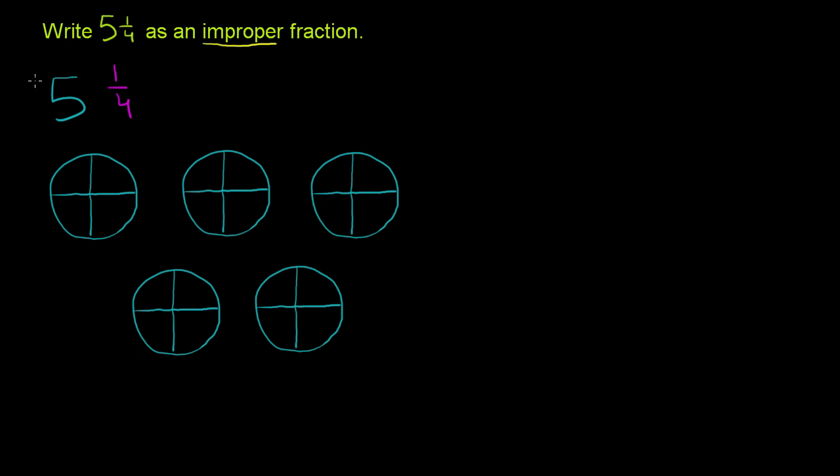So this is what the 5 represents. 5 literally represents, so let me circle all of this together, that is the 5 part right there. That is what 5 literally represents. It represents 5 whole pies.